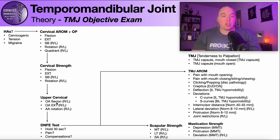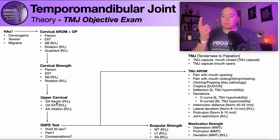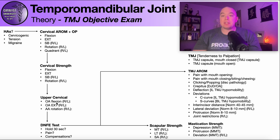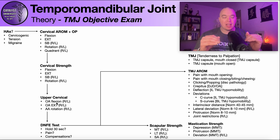For AA rotation — atlantoaxial rotation, C1-C2 — this is essentially just the cervical flexion rotation test, a special test used in the assessment of the neck. The cervical flexion rotation test can be positive for cervicogenic headache, for neck pain localized to the AA joint, or it could potentially reproduce jaw pain. If it reproduces cervicogenic headache or neck pain, you may want to treat those, but if it reproduces their jaw pain, that is a big red flag that this jaw pain is very much related to the neck, particularly the upper cervical spine.